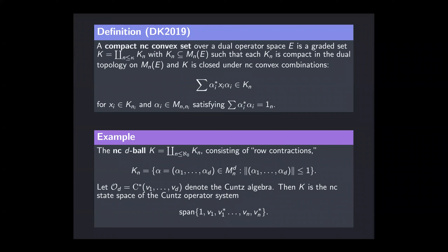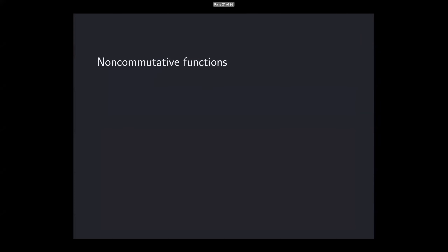It turns out we can realize the NC d-ball as the NC state space of an operator system — specifically, the Cuntz operator system, which is the operator system spanned by the canonical generators of the Cuntz algebra. This NC convex set is exactly the NC state space of this operator system. This demonstrates, or at least suggests, that whenever we have a compact NC convex set, we should expect there's an operator system with this NC convex set as its NC state space, and we'll see that this holds in complete generality.